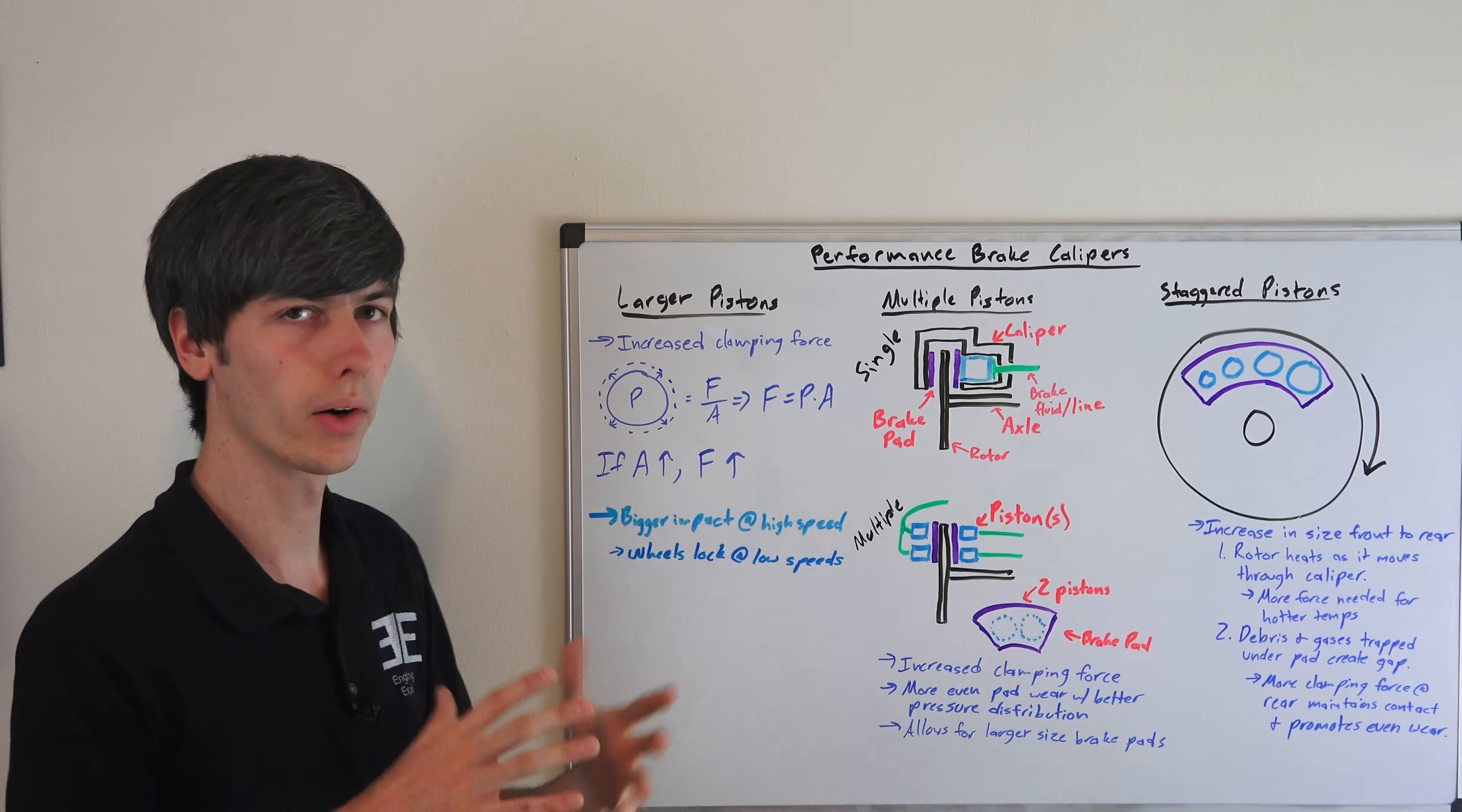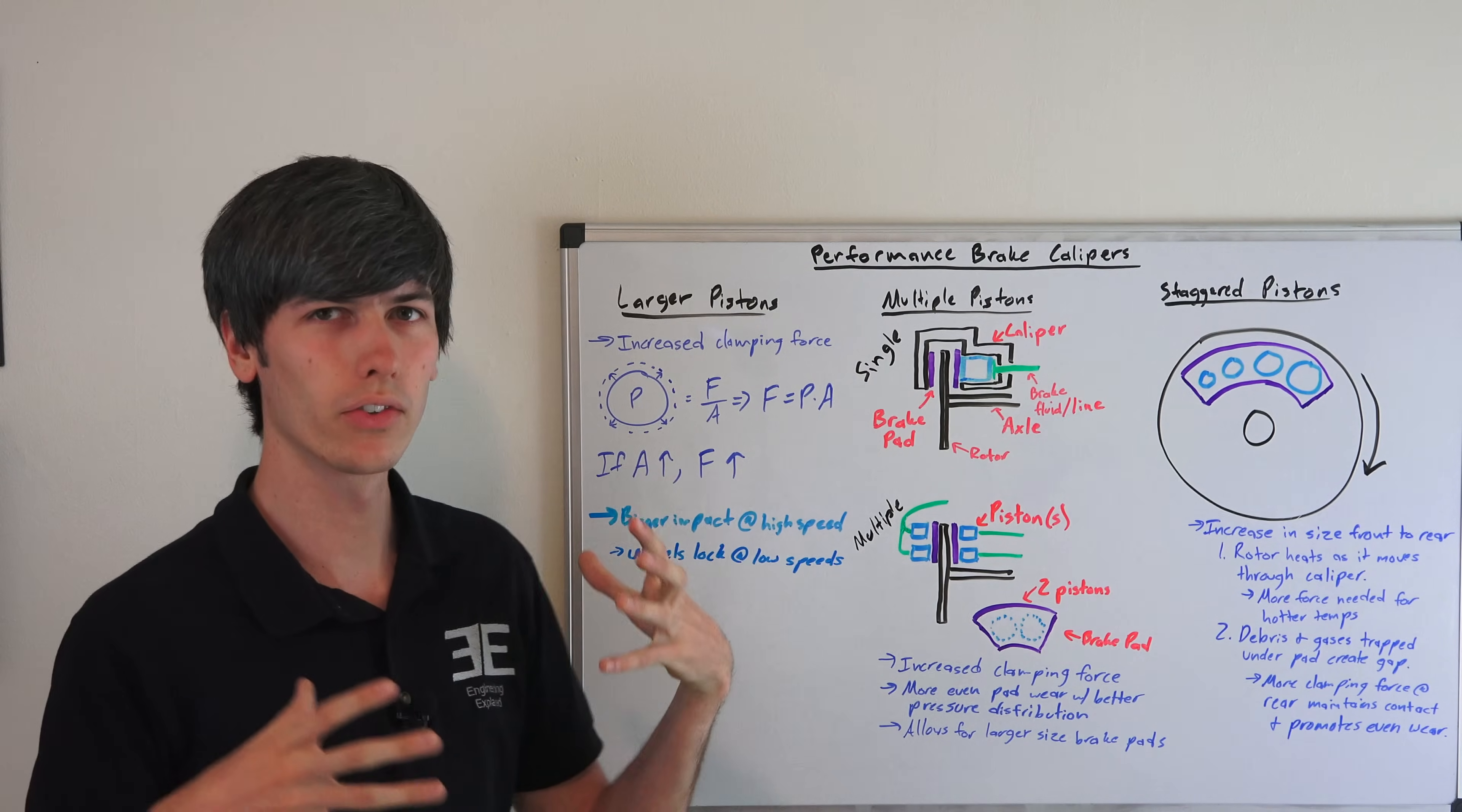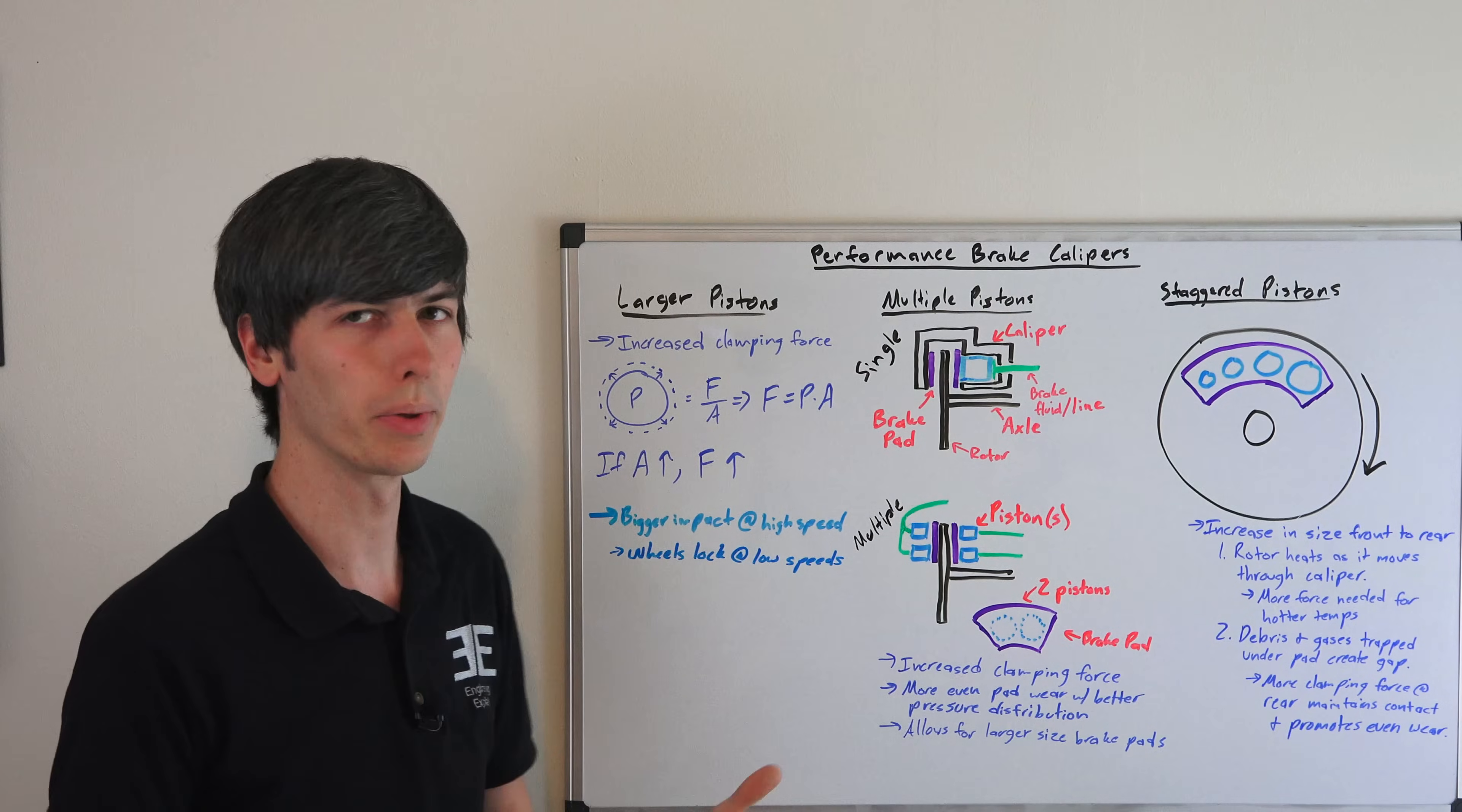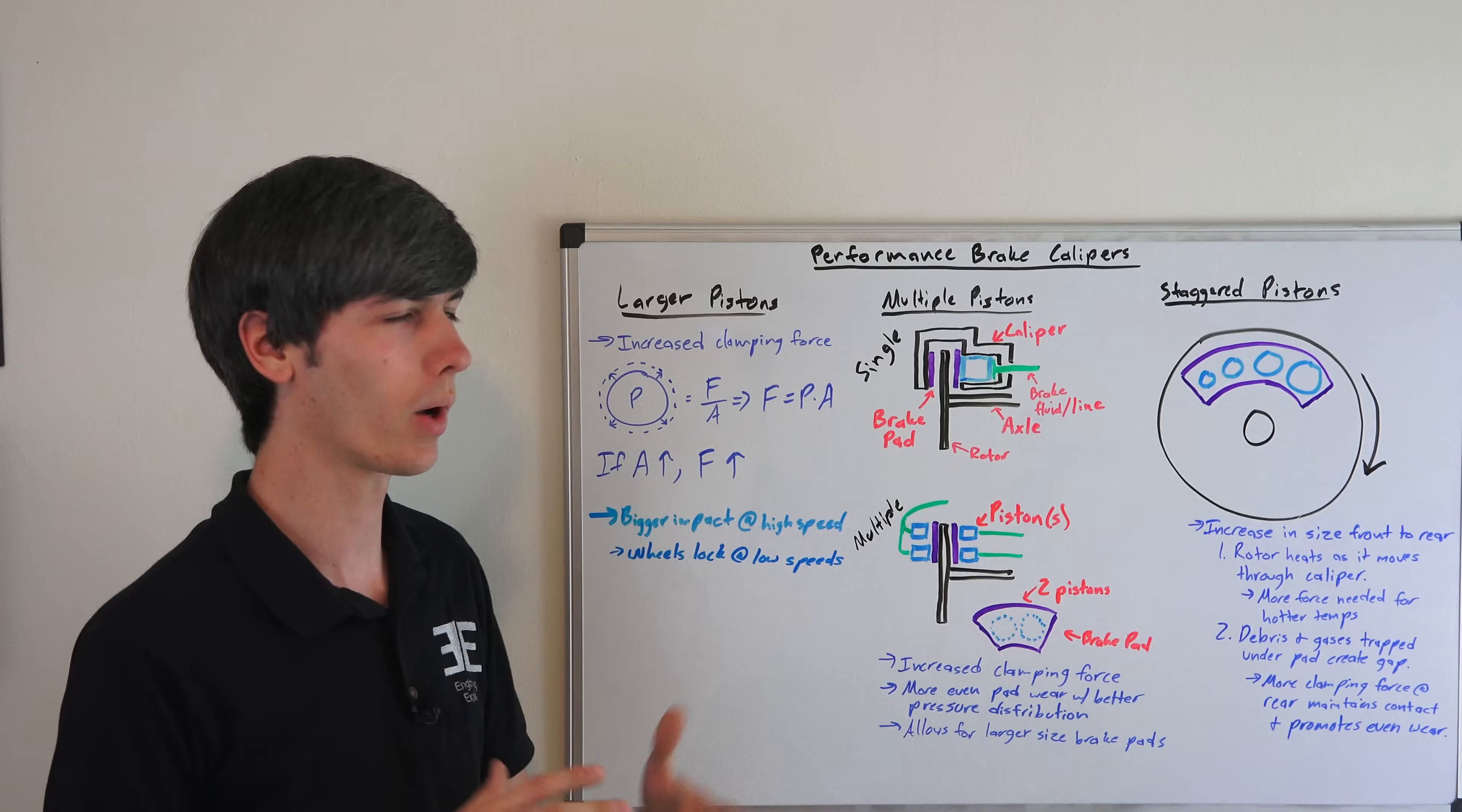So the larger your piston, the more braking force you're going to have. Now this is going to have a bigger impact when you're going at higher speeds. When you're traveling at low speeds, most brakes out there are very easily capable of locking up. That's why we have ABS.